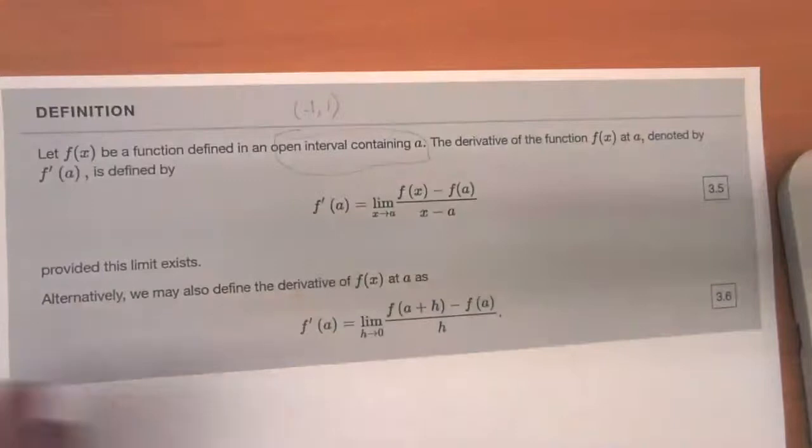This just basically means that F is defined at A and F is defined at points near A for some reasonable definition of near.